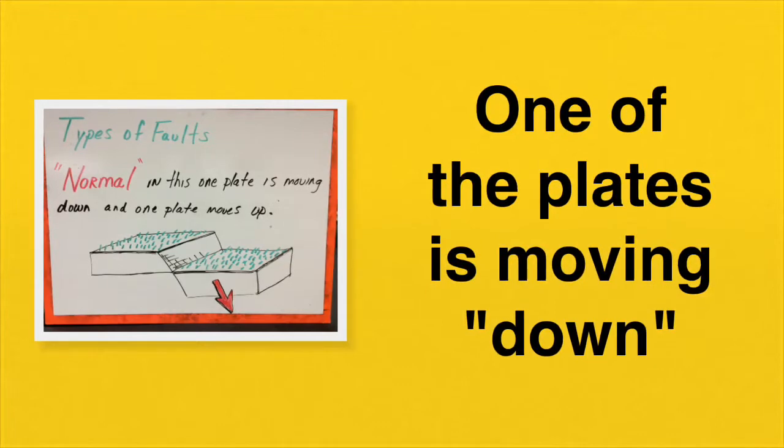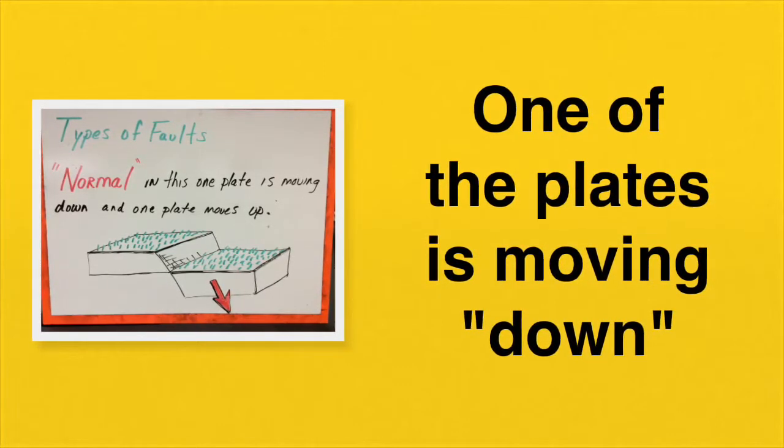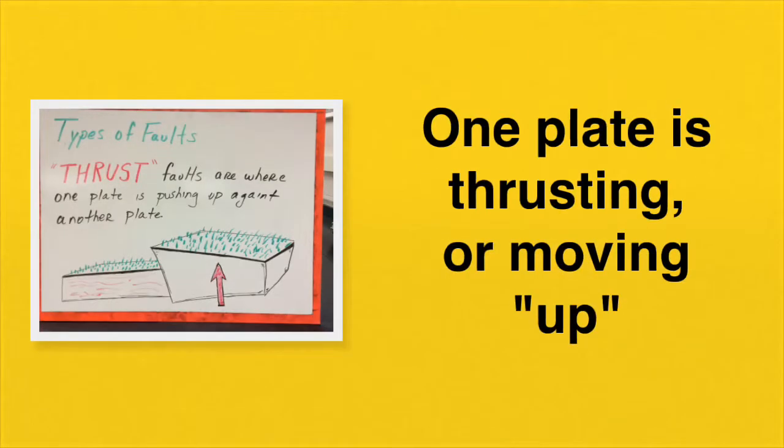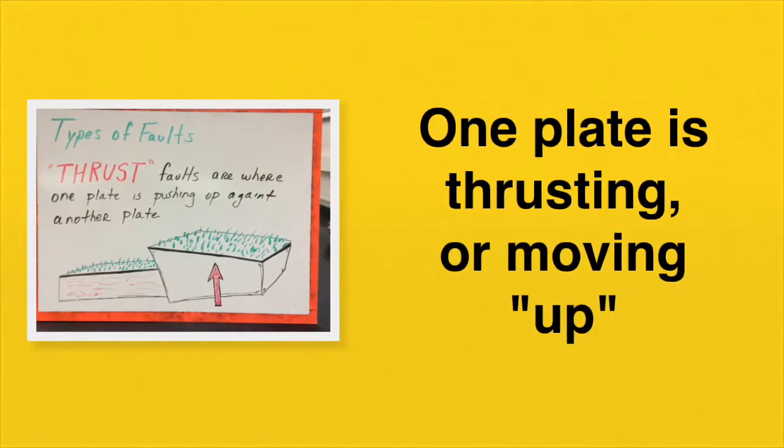A normal fault is described as where one plate is moving down. We see an illustration to the left. And finally, when one plate is thrusting or moving up, we call this a thrust fault.